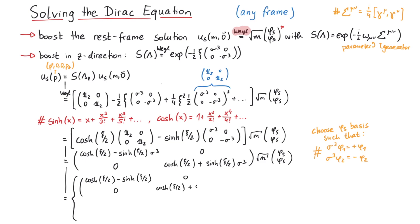If we choose the sigma 3 basis for the phi s, then sigma 3 times phi 1 gives plus phi 1, whereas sigma 3 times phi 2 gives minus phi 2. Also we can simplify this using an identity for the hyperbolic functions.